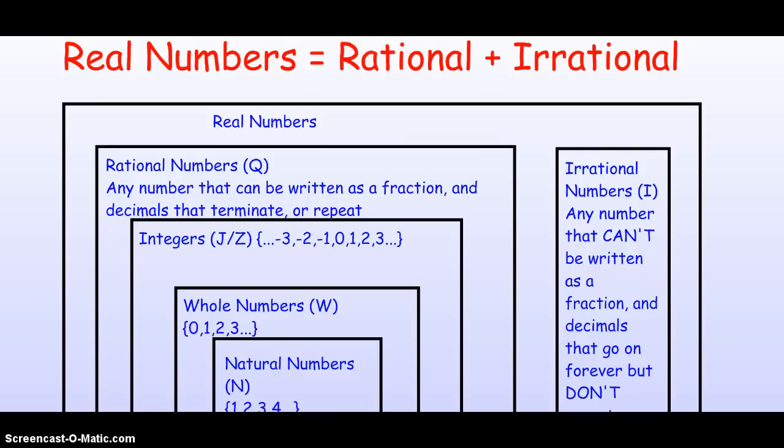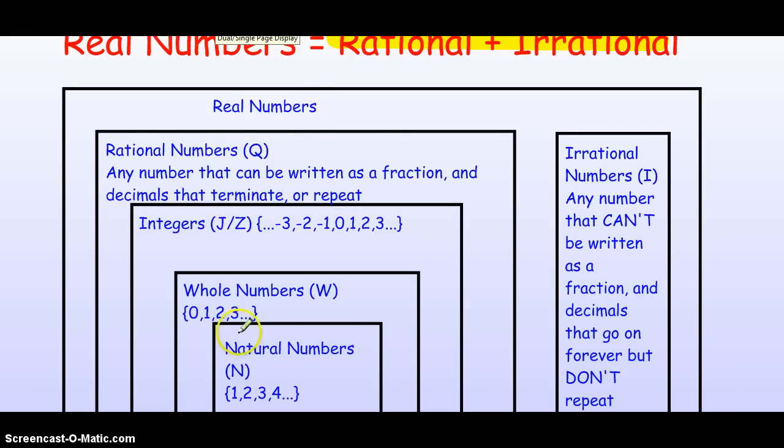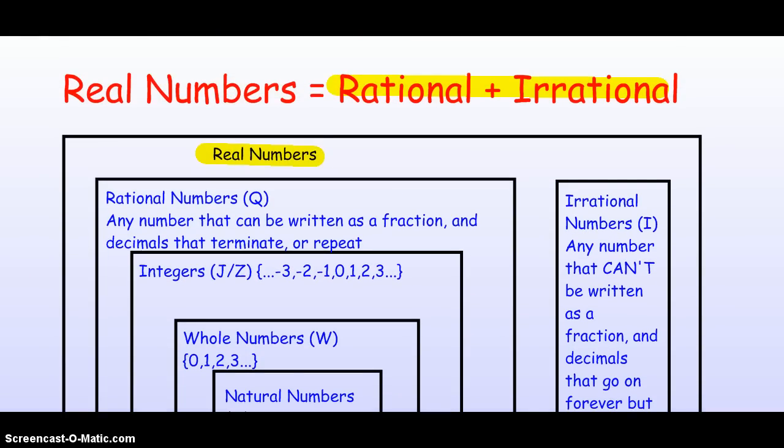And, a lot of times, people will just say that real numbers are rational numbers plus irrational numbers. Because, if you look here, those are the two largest subsets. And, if you add them all up, they include all these smaller sets. And, that constitutes the whole real number system.